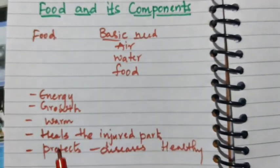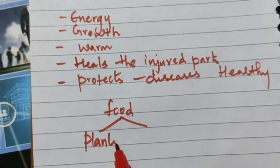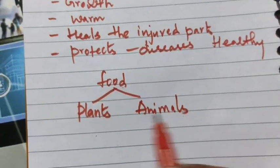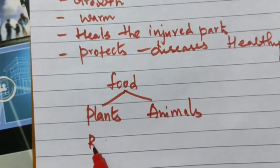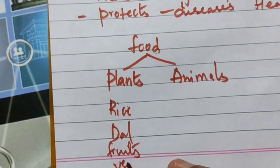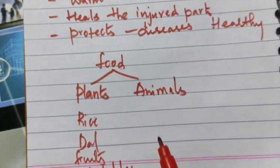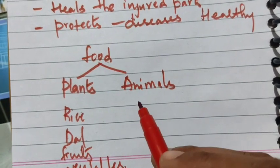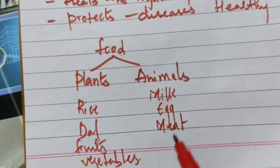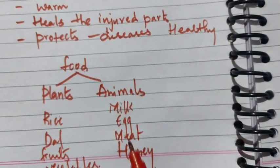Now, from where do we get this food? Food is obtained from both plants and animals. From plants we get foods like rice, dal, fruits, and vegetables. From animals we get foods like milk, eggs, meat, and honey.